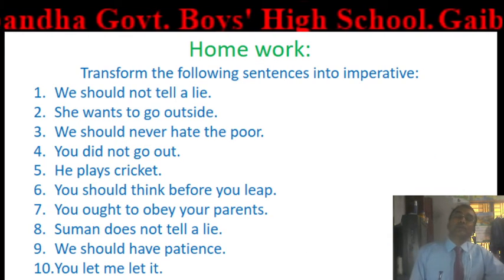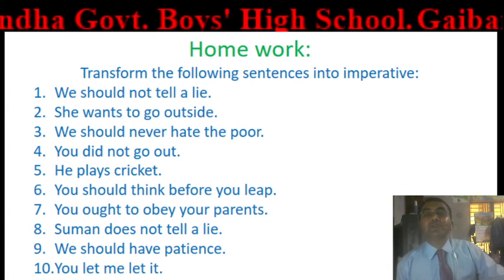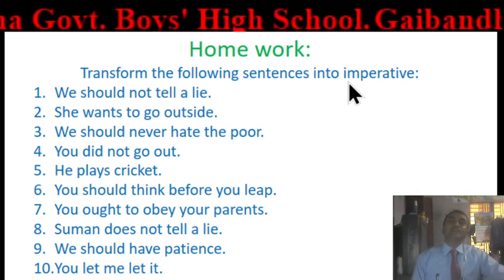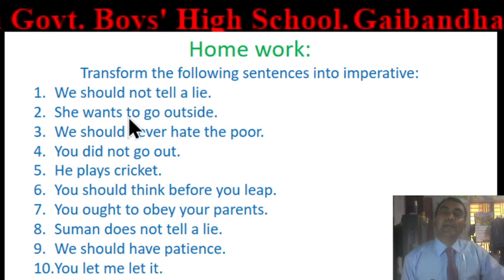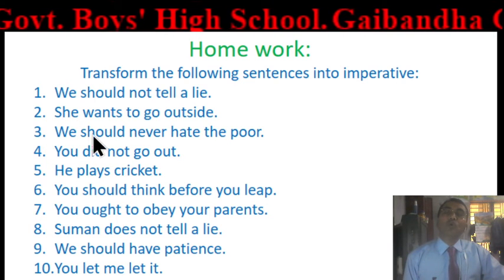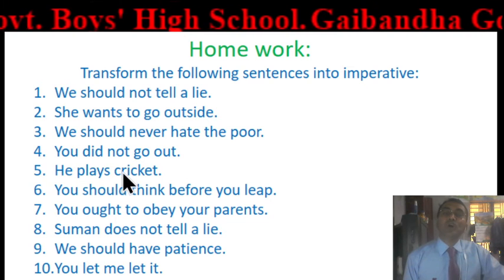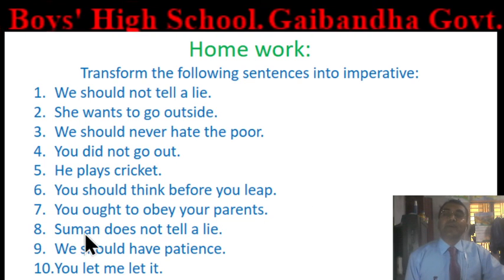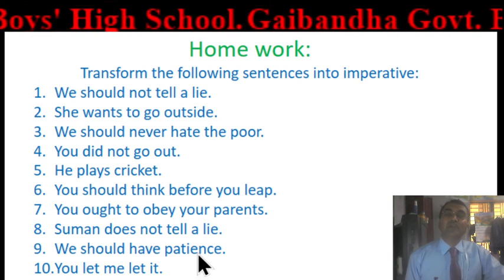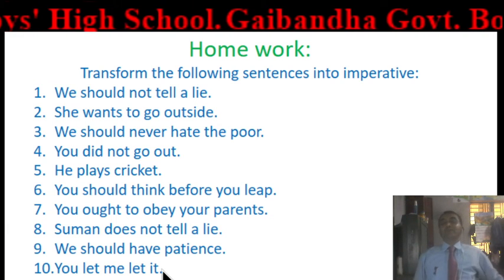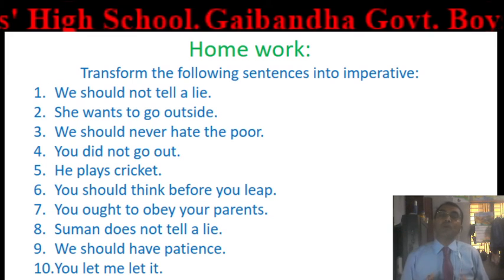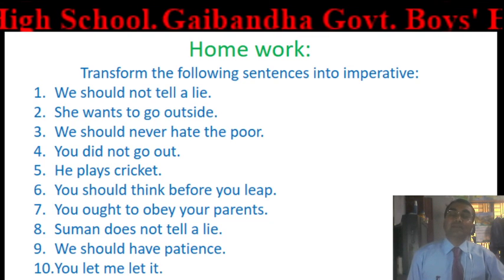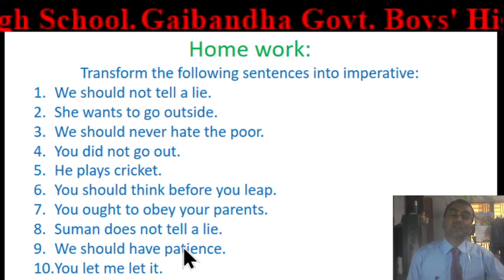I have discussed the basic rules on transforming assertive into imperative sentences. Here is your homework: transform the following sentences into imperative. (1) We should not tell a lie. (2) She wants to go outside. (3) We should never hate the poor. (4) You do not go out. (5) We play cricket. (6) You should think before you speak. (7) You ought to obey your friends. (8) Shumi does not tell a lie. (9) You should have patience. (10) You will let me light it. When the school reopens, show your work to your English teacher.